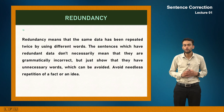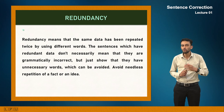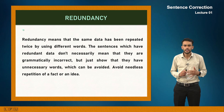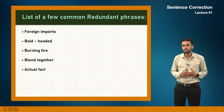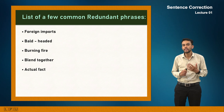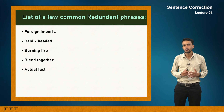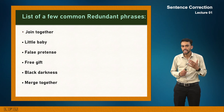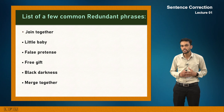The last error type is redundancy — using unnecessary words that make speech or writing complex. Examples of redundant phrases: 'foreign imports' (imports are already foreign), 'bald headed', 'burning fire', 'blend together', 'actual fact', 'join together', 'little baby', 'false pretense', 'free gift', 'black darkness', 'merged together.' More than one word is used to describe the same thing, which should be avoided.